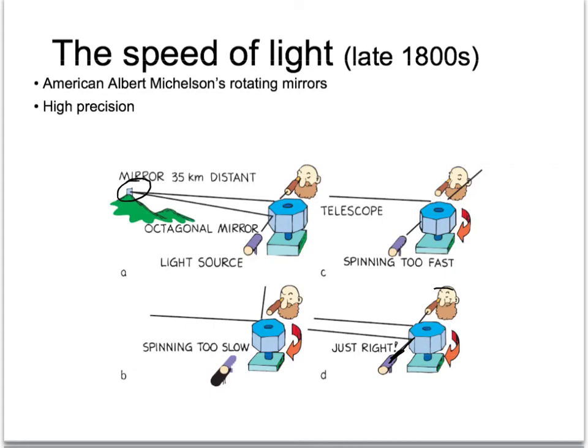The scope was actually over here near his eye. This would be the light source and then the scope. If he got that rate of spinning just right, he could figure out, knowing the angle between this mirror and the mirror on the hill, exactly how fast that light had to be traveling for the mirror to be spinning at a certain speed.